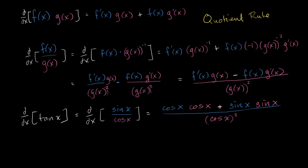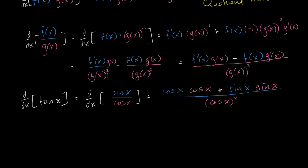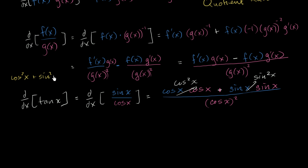Now what does this simplify to? Well, in the numerator right over here, we have cosine of x times cosine of x, so all of this simplifies to cosine squared of x. And sine of x times sine of x, that's just sine squared of x. And what's cosine squared of x plus sine squared of x? This is one of the most basic trigonometric identities — it comes straight out of the unit circle definition of trig functions. Cosine squared of x plus sine squared of x is equal to 1. So the entire numerator is equal to 1.